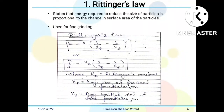Rittinger's law states that the energy required to reduce the size of particles is proportional to the change in surface area of the particles. Rittinger's law is used for fine grinding. The equation is: E = K_R × (1/X_P − 1/X_F), where E is energy (also written as power divided by feed), K_R is Rittinger's constant, X_P is the average size of product particles in meters, and X_F is the average initial size of feed particles in meters.